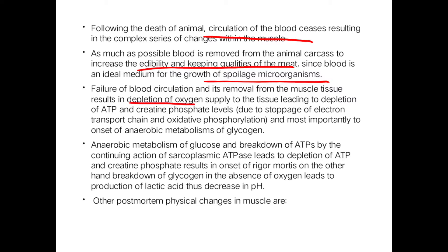Failure of blood circulation and its removal from muscle tissue results in depleted oxygen supply to all tissues, leading to depletion of ATP and creatine phosphate levels due to stoppage of electron transport chain and oxidative phosphorylation, and most importantly the onset of anaerobic metabolism of glycogen. When the animal is killed, respiration stops and oxygen levels fall completely, reducing ATP production in mitochondria, leading to anaerobic conversion of glycogen to lactic acid.